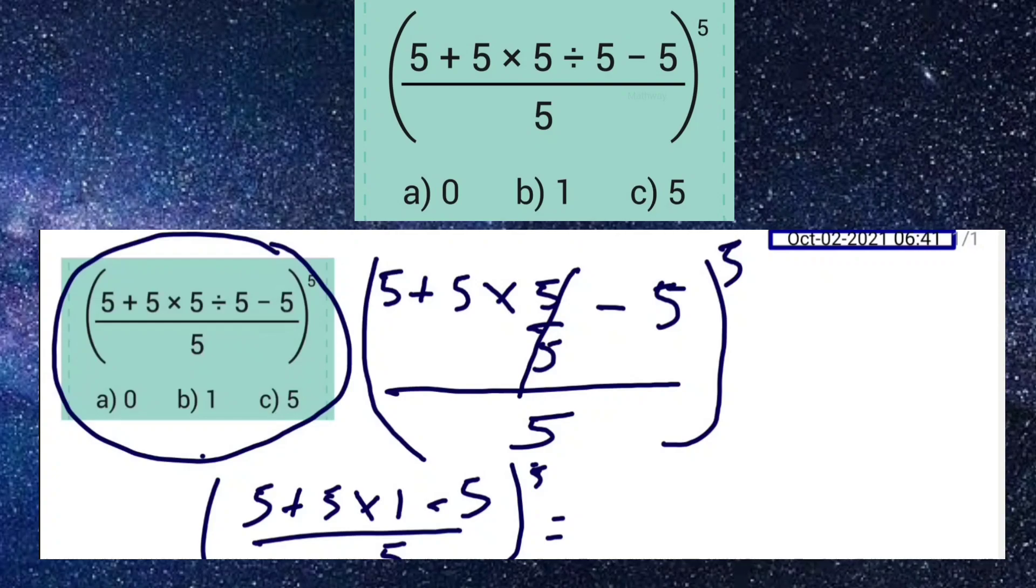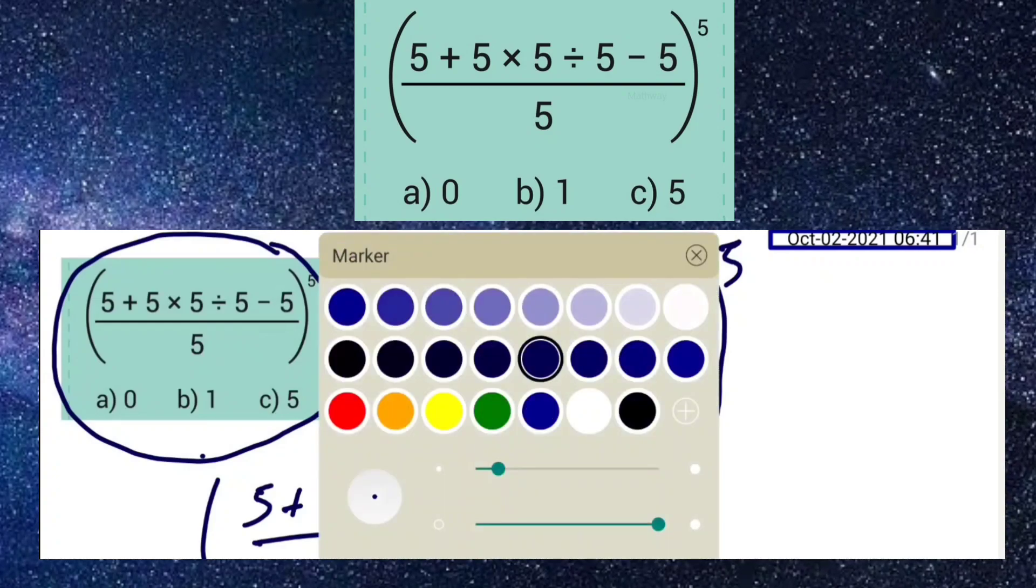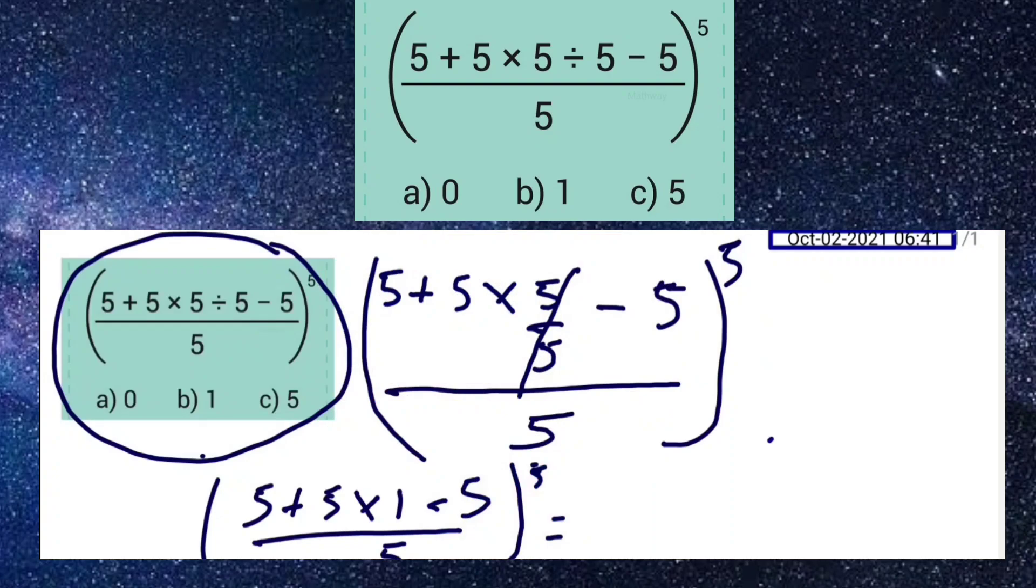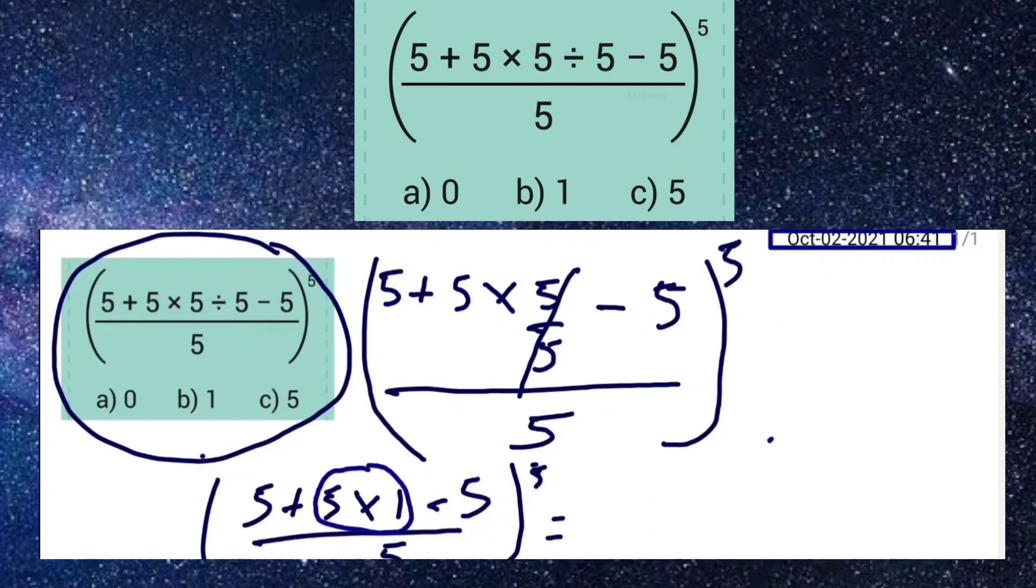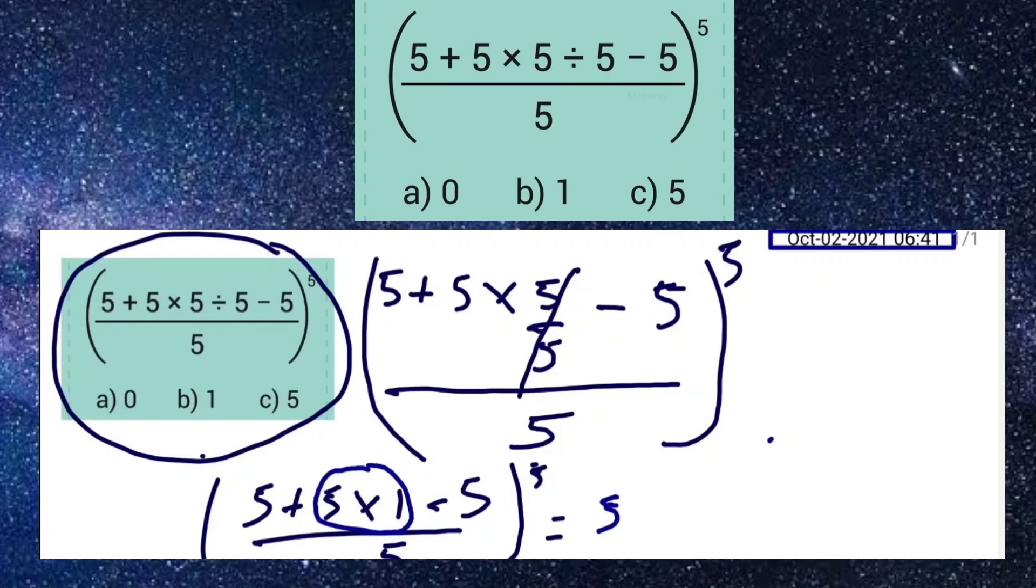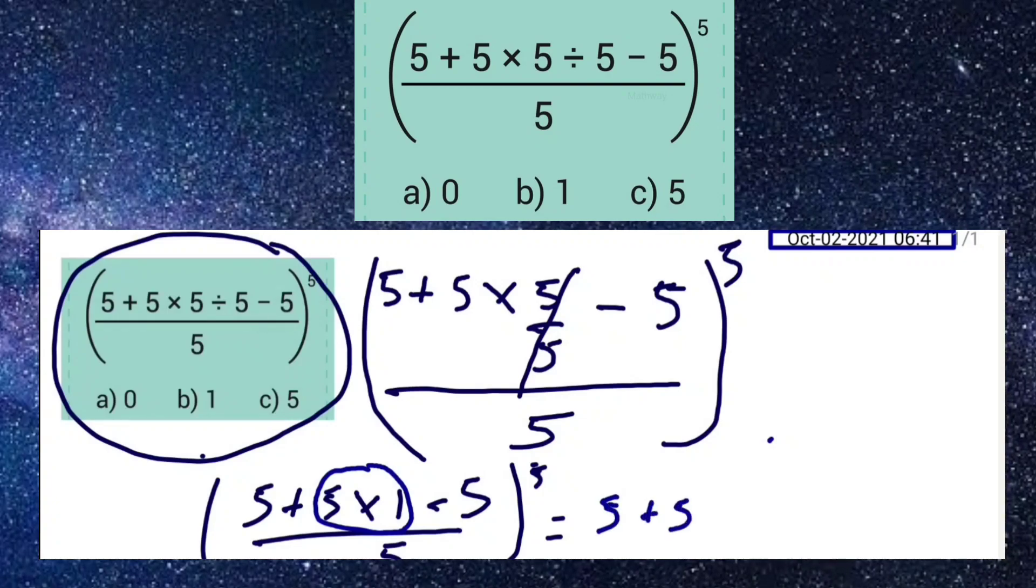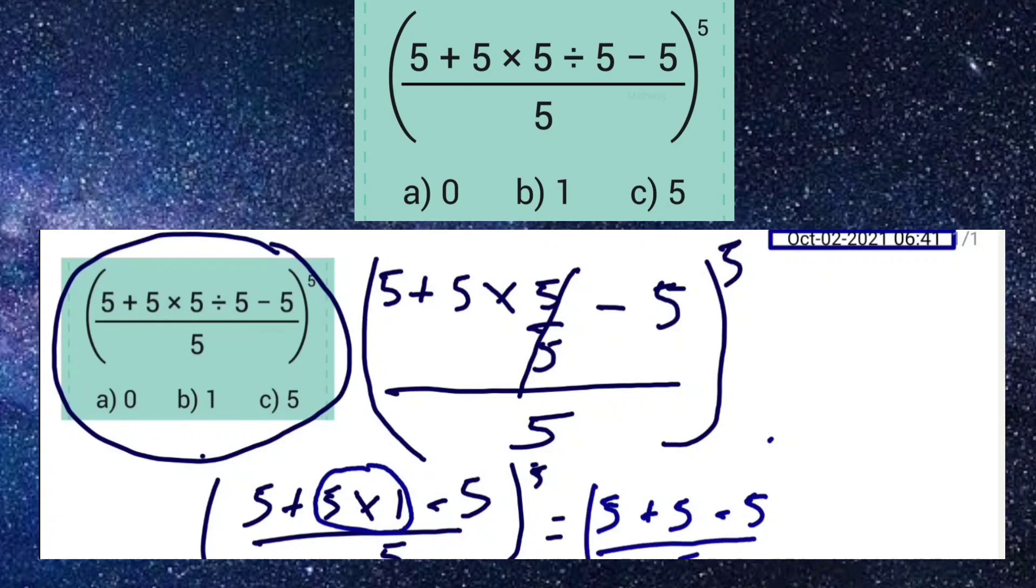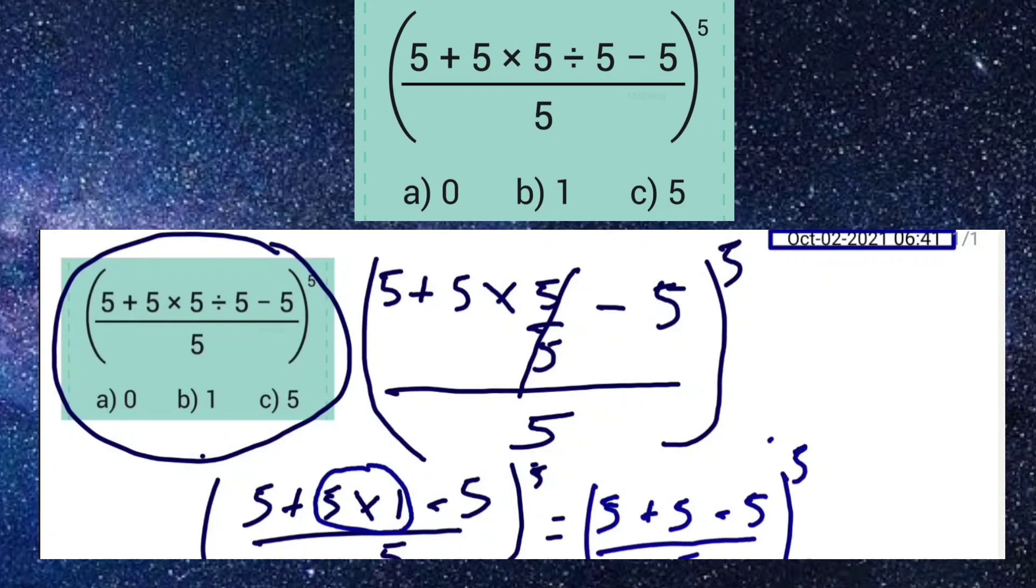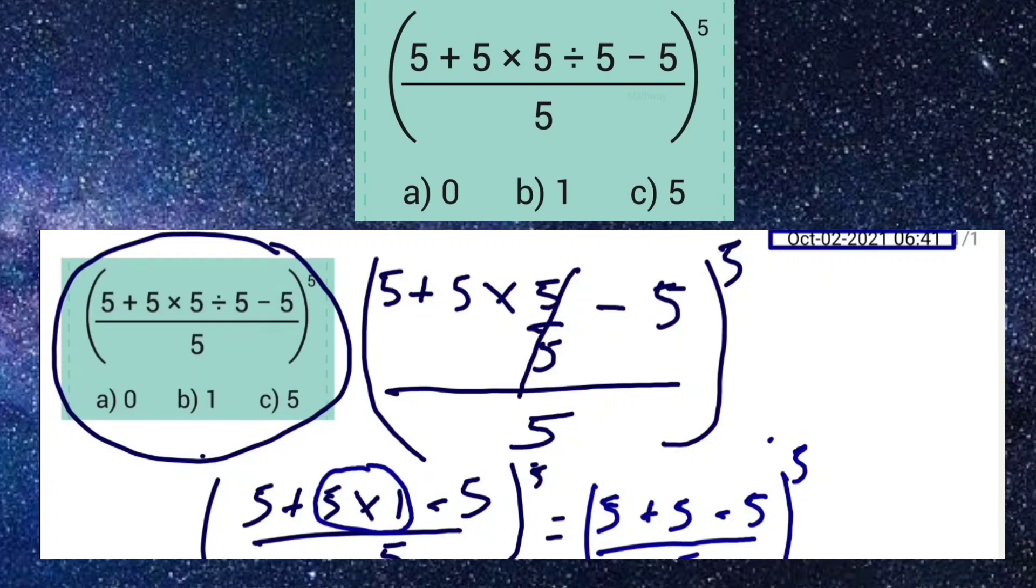Now the exponent of 5 means multiplying the base by itself 5 times. So we have 5 plus 5 minus 5 divided by 5, and this calculation repeats 5 times.